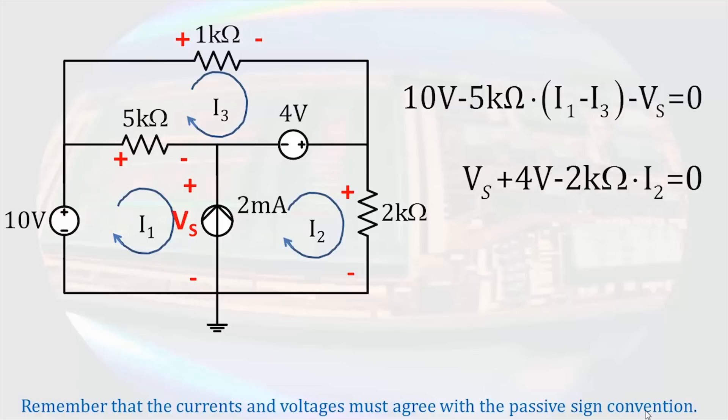The remaining equation, again beginning in the lower left-hand corner, starts with a drop of 1 kilo ohm times I3, a decrease of 4 volts, and an increase of 5 kilo ohms times I1 minus I3.